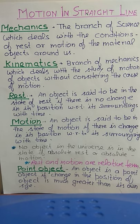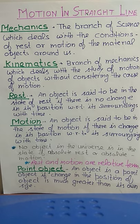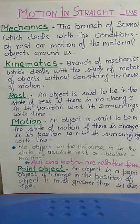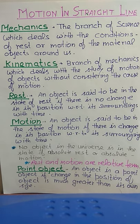The first topic of motion in a straight line is mechanics. Mechanics is related to motion or a state of rest — whether an object is in the state of rest or state of motion. We can define mechanics as the branch of science which deals with the conditions of rest or motion of material objects around us.